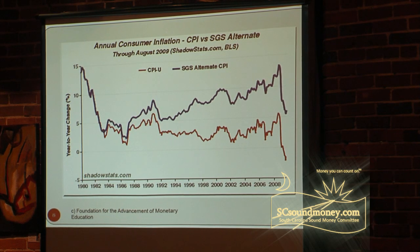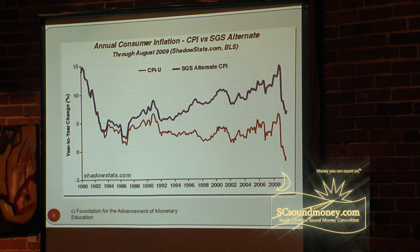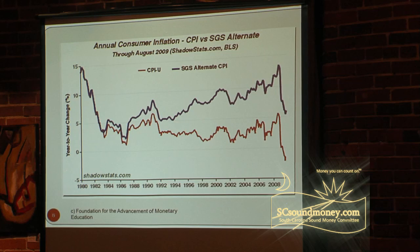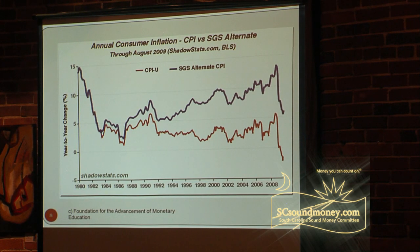In the 1980s the Bureau of Labor Statistics modified the methodology by which they calculate the CPI. The top blue line represents the CPI using consistent methodology; the bottom red line represents the CPI as the BLS now publishes it, with changes including geometric weighting, substitution, and hedonic pricing — stuff nobody can understand. The result is they fool people into thinking there's less depreciation of money than there really is. All through the 1980s and 1990s, the BLS reported inflation running one to two percent, but truly it was running six, seven, eight, as high as twelve percent.